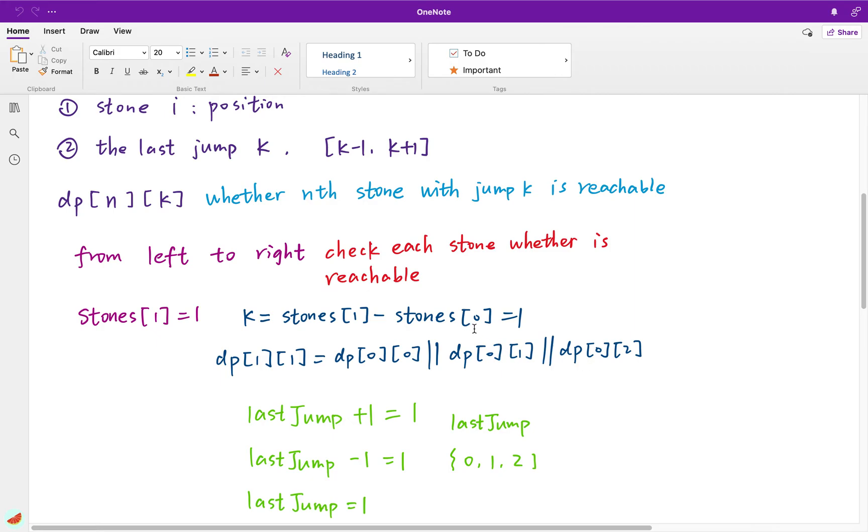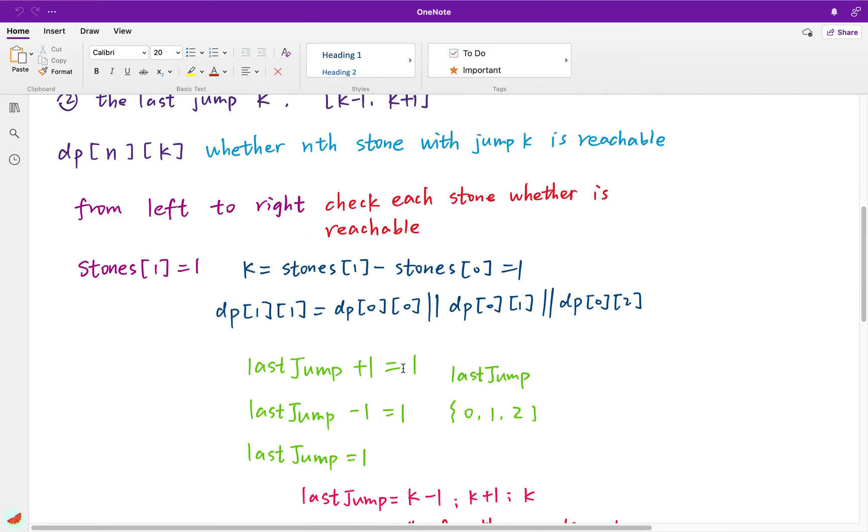So what does that mean? Because the previous stone is 0, so dp[0][0], dp[0][1], and this is just the last jump. The jump, as I said before, it will be k minus 1, k plus 1, k, and the k is 1. So we get these three values. It actually means any stone is reachable by this jump. We can then jump k to the current stone 1.